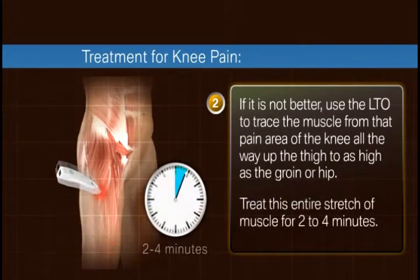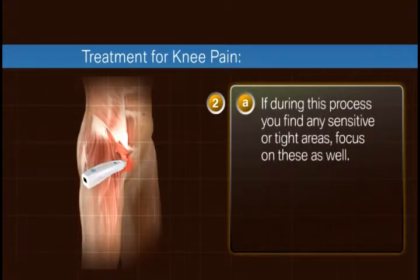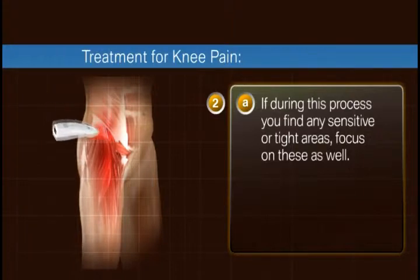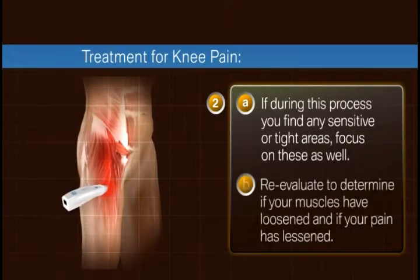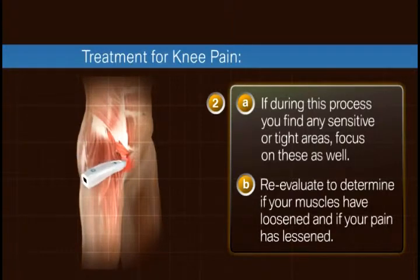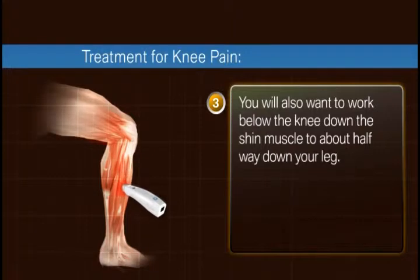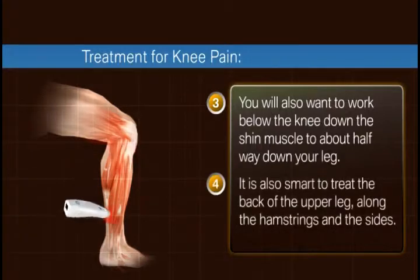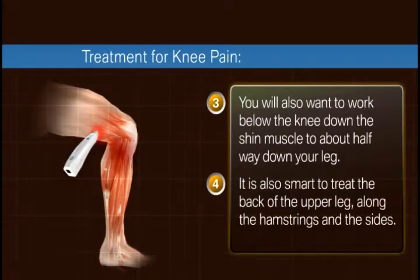Treat this entire stretch of muscle for two to four minutes. If during this process you find any sensitive or tight areas, focus on these as well. Re-evaluate to determine if your muscles have loosened and if your pain has lessened. You will also want to work below the knee down the shin muscle to about halfway down your leg. It is also smart to treat the back of the upper leg along the hamstrings and the sides.